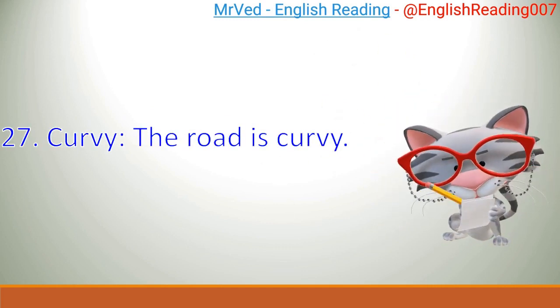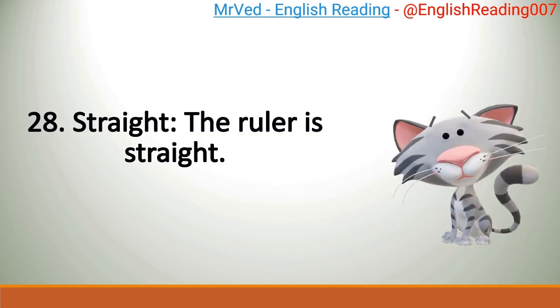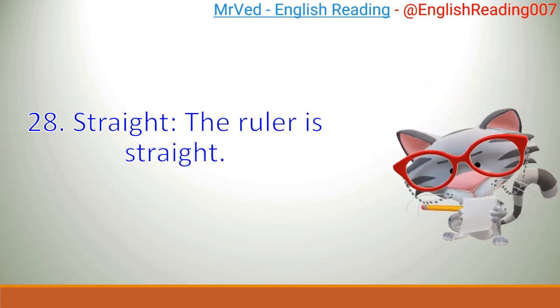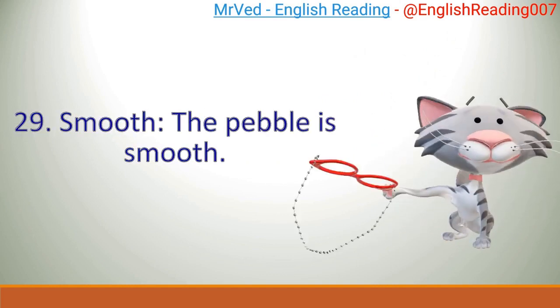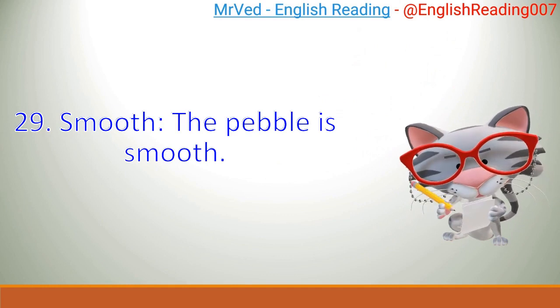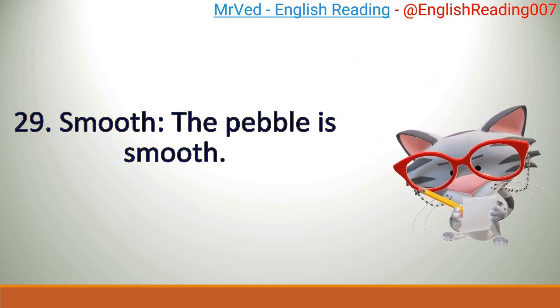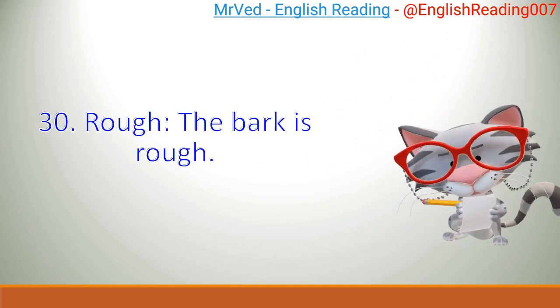27. Curvy. The road is curvy. 28. Straight. The ruler is straight. 29. Smooth. The pebble is smooth. 30. Rough. The bark is rough.